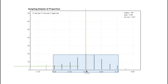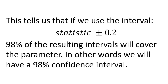This tells us that if we use the interval equal to the statistic plus or minus 0.2, 98% of the resulting intervals based on the statistics in the plot will cover the parameter. In other words, we have a 98% confidence interval. For all the statistics in the blue box, we get a more informative interval than the interval from 0 to 1. The cost of the more informative interval is that for some values of the statistic, the resulting interval will not cover the parameter.